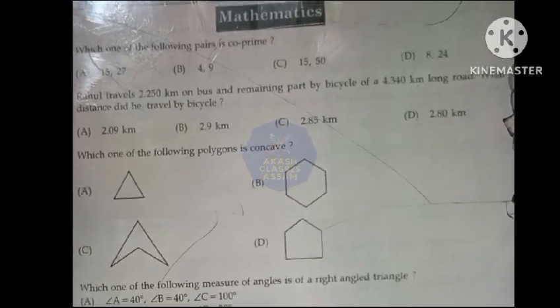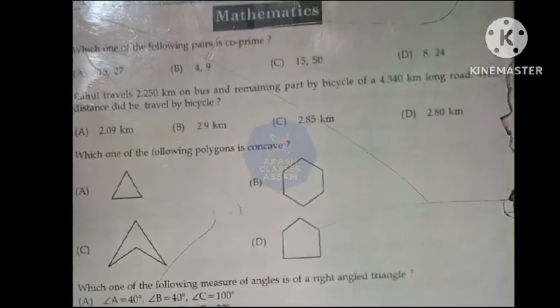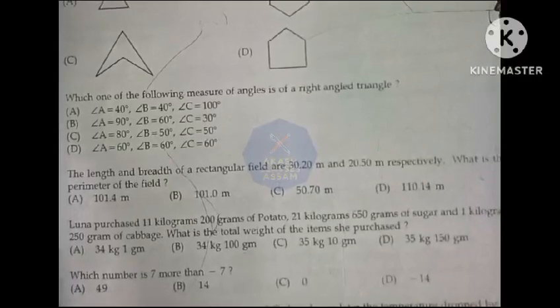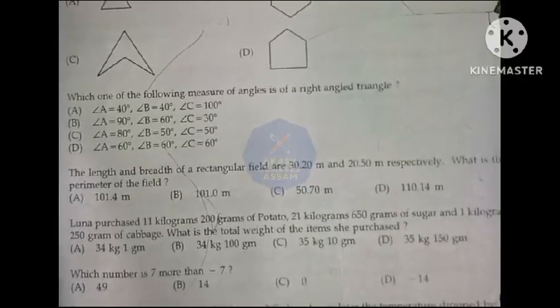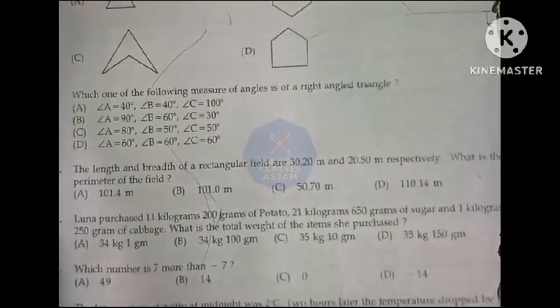Option A. Which one of the following polygons is concave? Option C. Which one of the following measures of angles is of a right angle triangle?